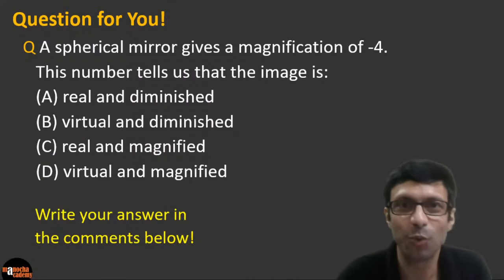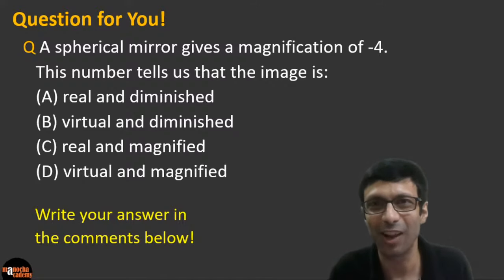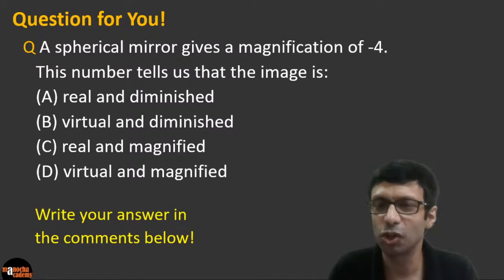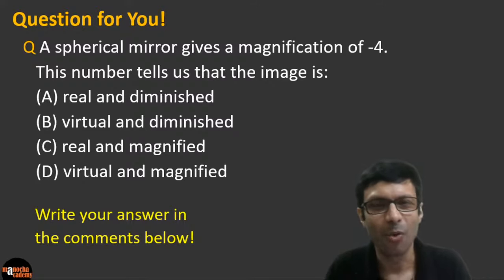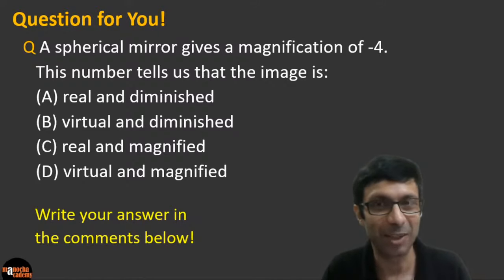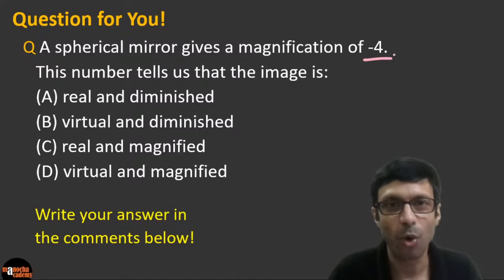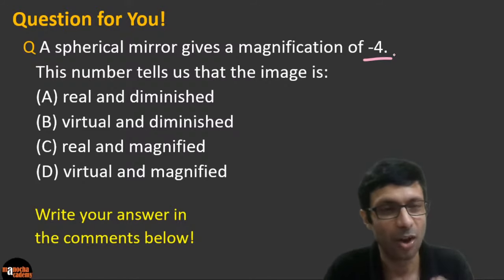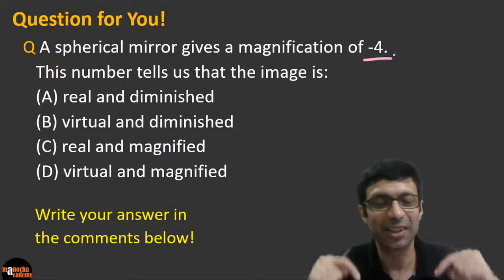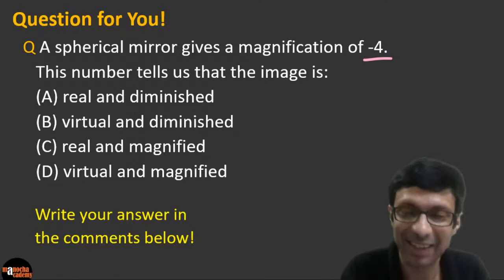Here's the homework question: a spherical mirror gives a magnification of −4. What does this tell us? Is the image real and diminished, virtual and diminished, real and magnified, or virtual and magnified? I want all of you to think and write your answer in the comments below — I'll reply as soon as possible.